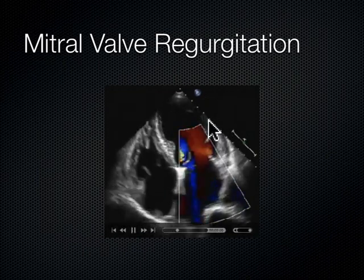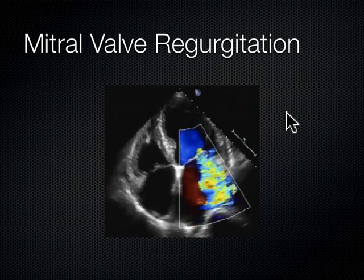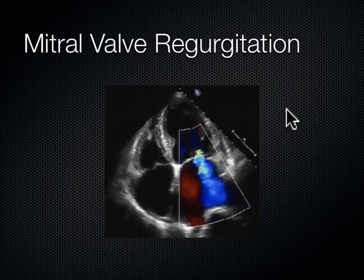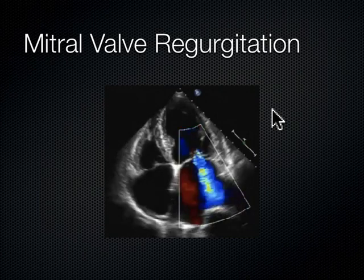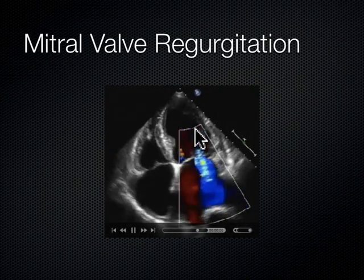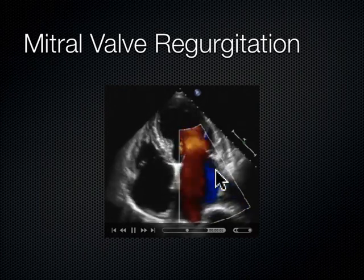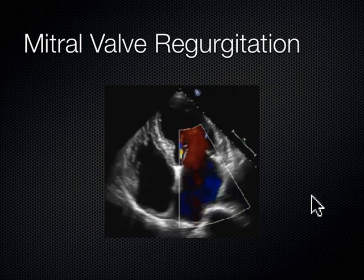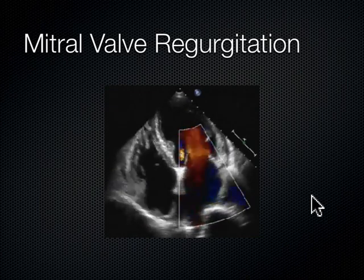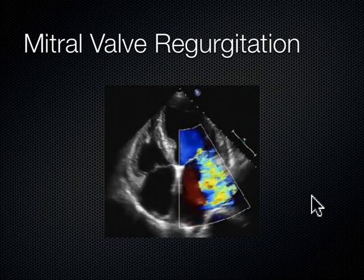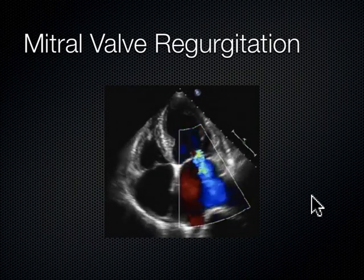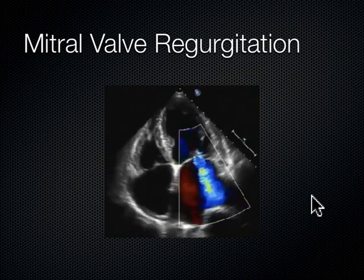During systole — BART: blue away, red towards. We don't expect to see blood squirting away from the probe back into the left atrium. So this blue jet that we see here coming into the back of the left atrium and smacking into the far wall — that would be somewhere around moderate to severe mitral valve regurgitation, because during systole we shouldn't see that blue jet slamming back into that left atrium.